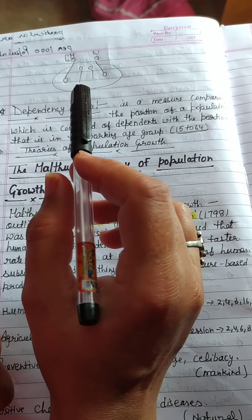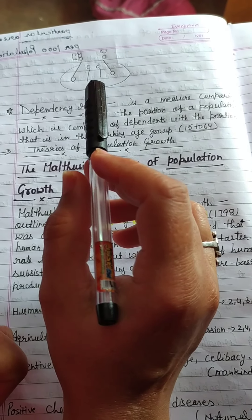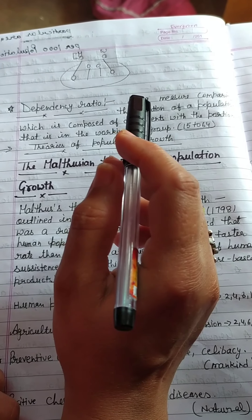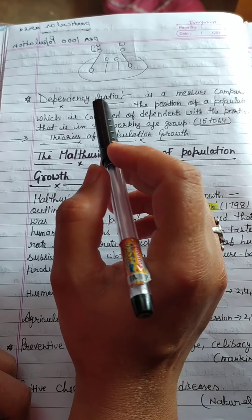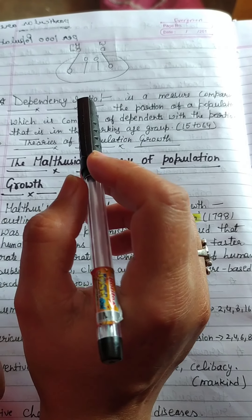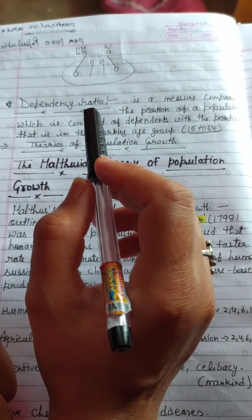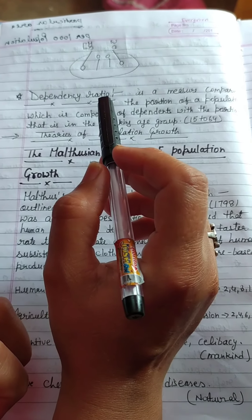Sterilization is a contraceptive method. There are two types: Vasectomy and tubal ligation. Vasectomy is a male population control method, and tubal ligation is a female population control method.